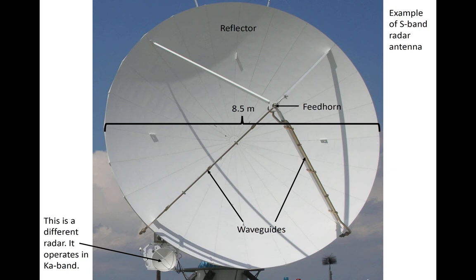This is a reflector for the S-band radar, which transmits radiation with a wavelength of 10 centimeters, meaning that the reflector is 85 times wider than the wavelength of the transmitted signal. A larger reflector allows for a narrower beam width, and this particular system permits a beam width of a little less than 1 degree. Waves generated by the transmitter travel up a wave guide and are emitted through a feed horn toward the reflector. Then the waves scatter off of the reflector and generally propagate into the direction that the radar antenna is pointing.